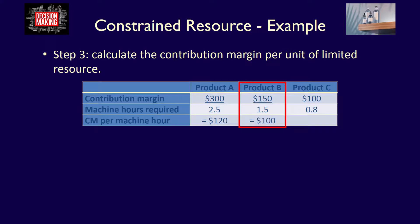For product B, the contribution margin of $150 divided by 1.5 machine hours equals $100 per machine hour — for every one hour of machine time, product B earns only $100. For product C, the contribution margin of $100 divided by 0.8 machine hours equals $125 per machine hour. This means that for every one hour of machine time, product C earns $125.